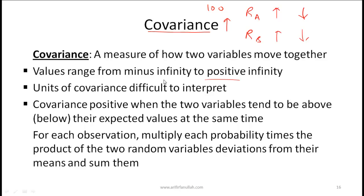Covariance values can range from minus infinity to positive infinity. Positive covariance means the returns move together; negative covariance means they move in opposite directions. The problem with covariance is that the unit is difficult to interpret — for instance, a covariance of 70 tells you it's positive, but the exact magnitude is hard to interpret. Covariance is positive when two variables tend to be above their expected values at the same time.